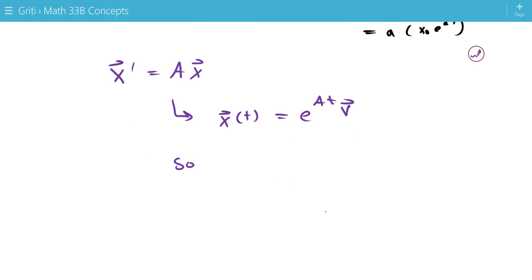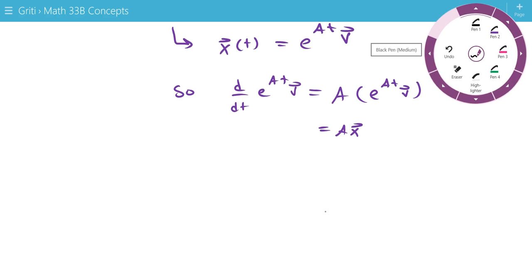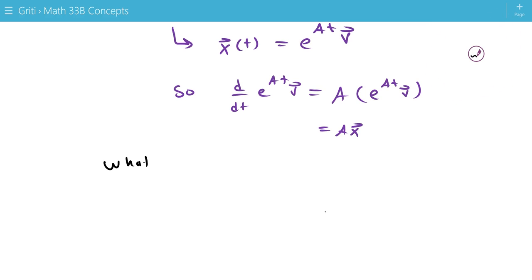So, that means our exponential has a property that the derivative with respect to time of e to the at b has to equal a times e to the at b, which is just ax. So, now we need to define, we need to find out what is e to the at.